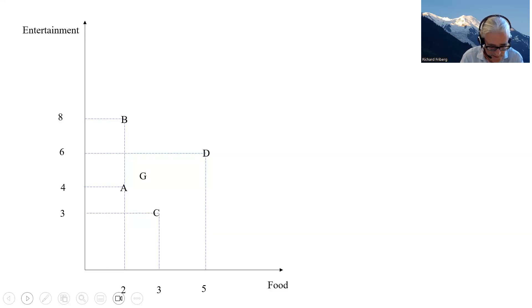So this is a consumer cares about two goods, services, entertainment and food. So we're measuring units of entertainment on the vertical axis, units of food on the horizontal axis, and we've illustrated a number of bundles, combinations of entertainment and food.